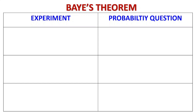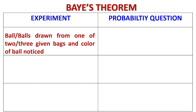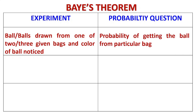Now let us check how the experiment will be structured and how the probability question will be framed. Balls are drawn from one of two or three given bags and the color is noticed. The meaning of 'color is noticed' is that you know the outcome of the second experiment — a red ball has come, a green ball has come, a white ball has come. You will be asked: if it is a red ball, what is the probability that it came from the first bag? If it is red, from the second bag? If it is green, from the third bag? If the question is asked about a particular bag, it is Bayes' theorem.